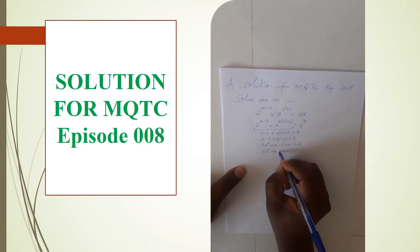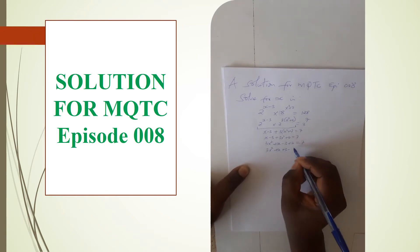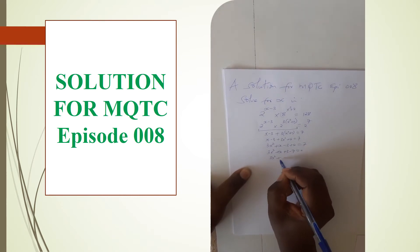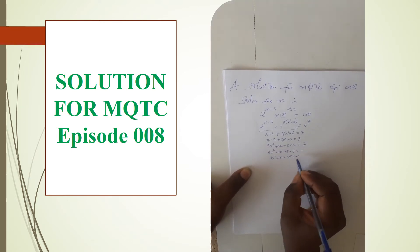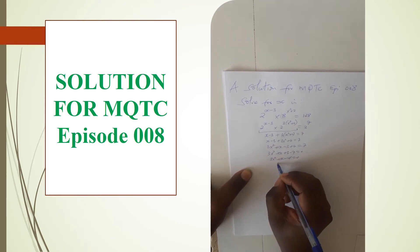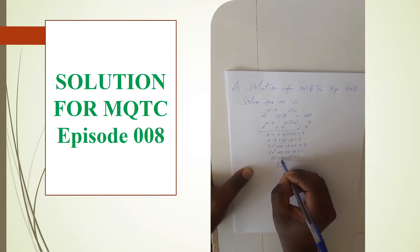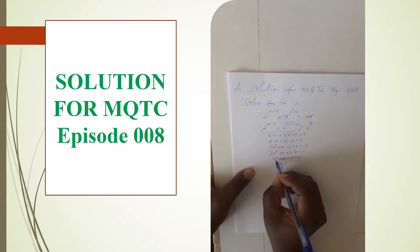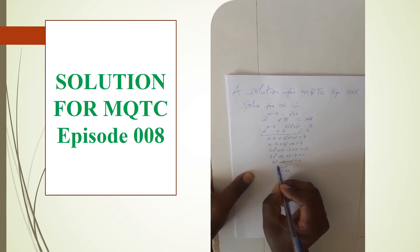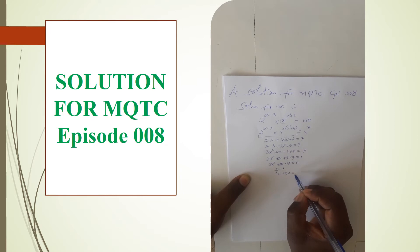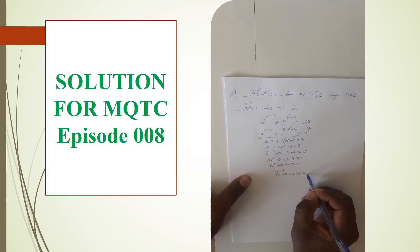We can bring 7 to the other side: 3x² plus x, and minus 3 plus 6 is positive 3, then bringing positive 7 over gives minus 7, equals 0. This gives us 3x² plus x minus 4 equals 0. This is a quadratic equation which we can solve using the factorization method. We find the sum — the coefficient of x, which is 1 — and the product: a is 3, c is minus 4, so multiplying gives minus 12.